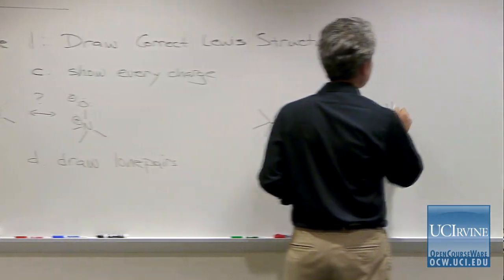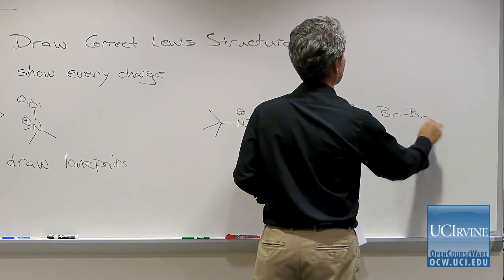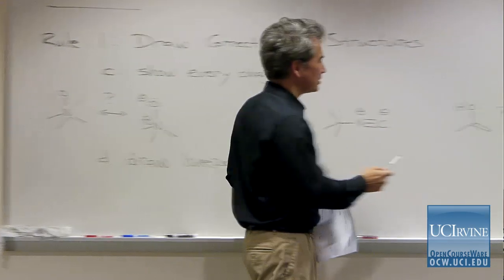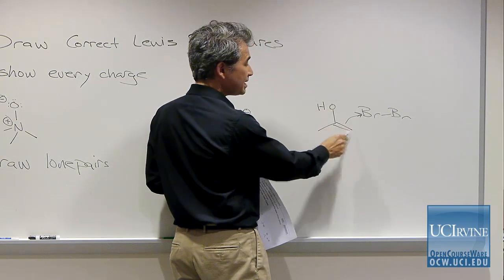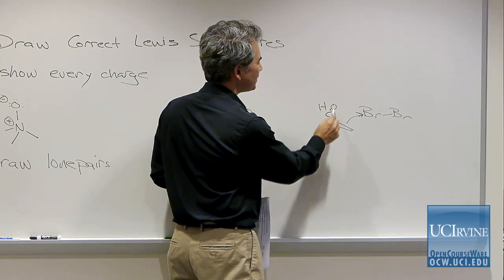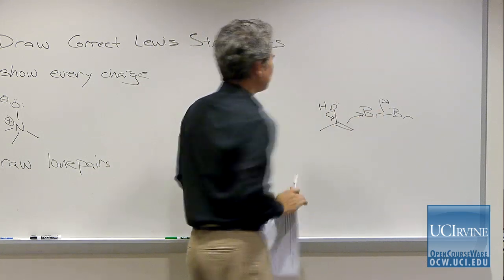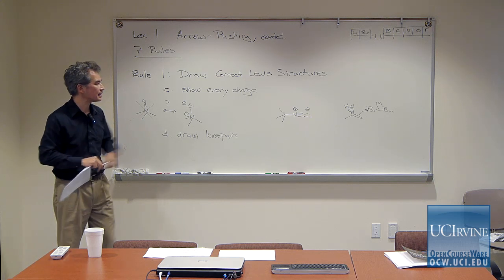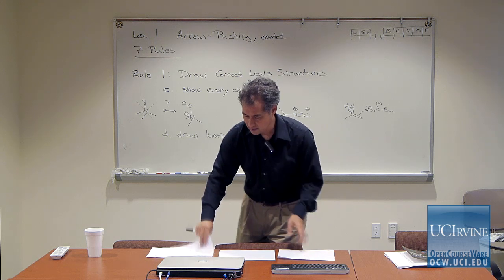Here's an example of a reaction between an enol and molecular bromine. The reaction involves carbon-bromine bond formation. The reason why this double bond is so reactive is because there are lone pairs on the oxygen atom that are donating into the pi star, making it nucleophilic. The reaction starts with a lone pair on that oxygen, and if you didn't draw it, you might forget why that carbon-carbon double bond is so reactive.